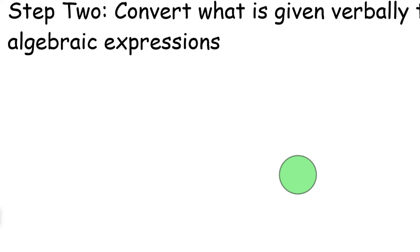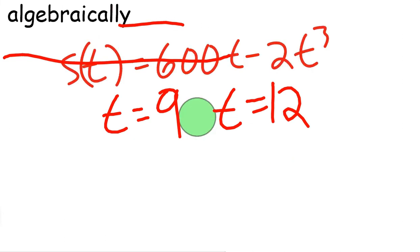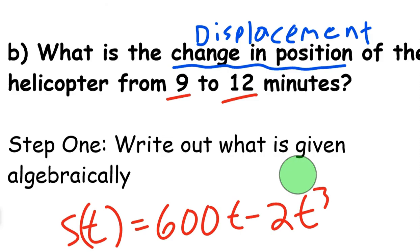Since they said it's from 9 to 12 minutes, when we go to Step 2, we want to convert what is given into algebraic expressions. So we know that t = 9 and t = 12. The reason we know that is because when we read the question, it says from 9 to 12 minutes.